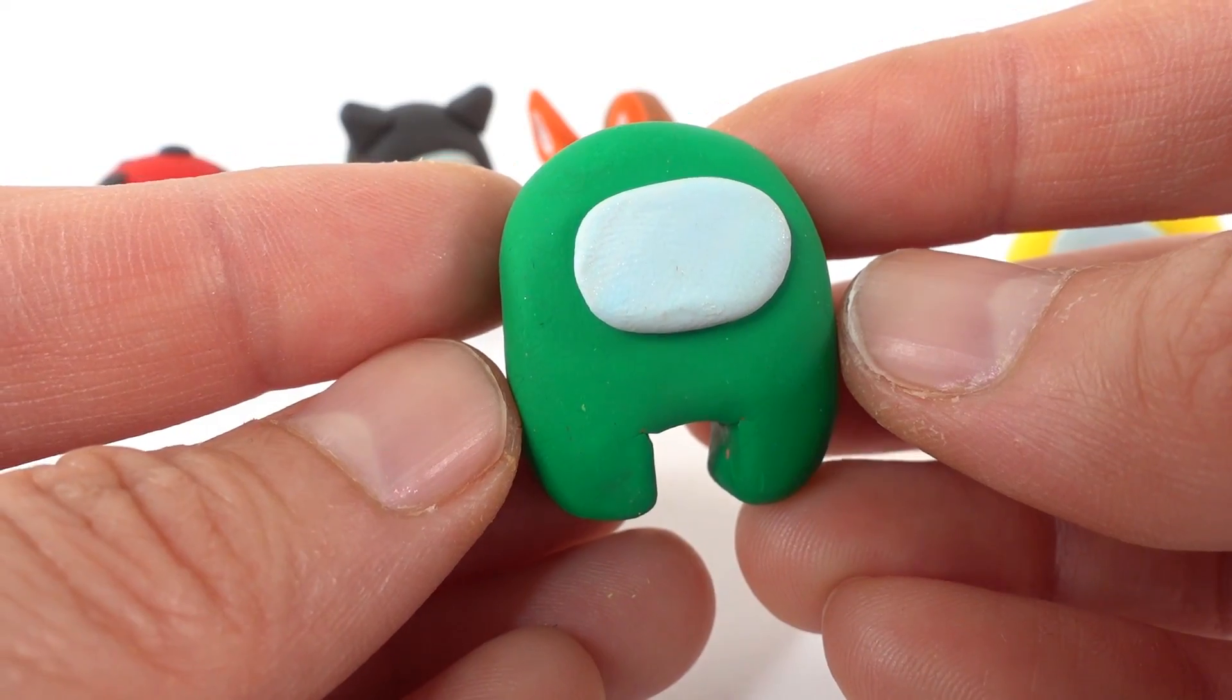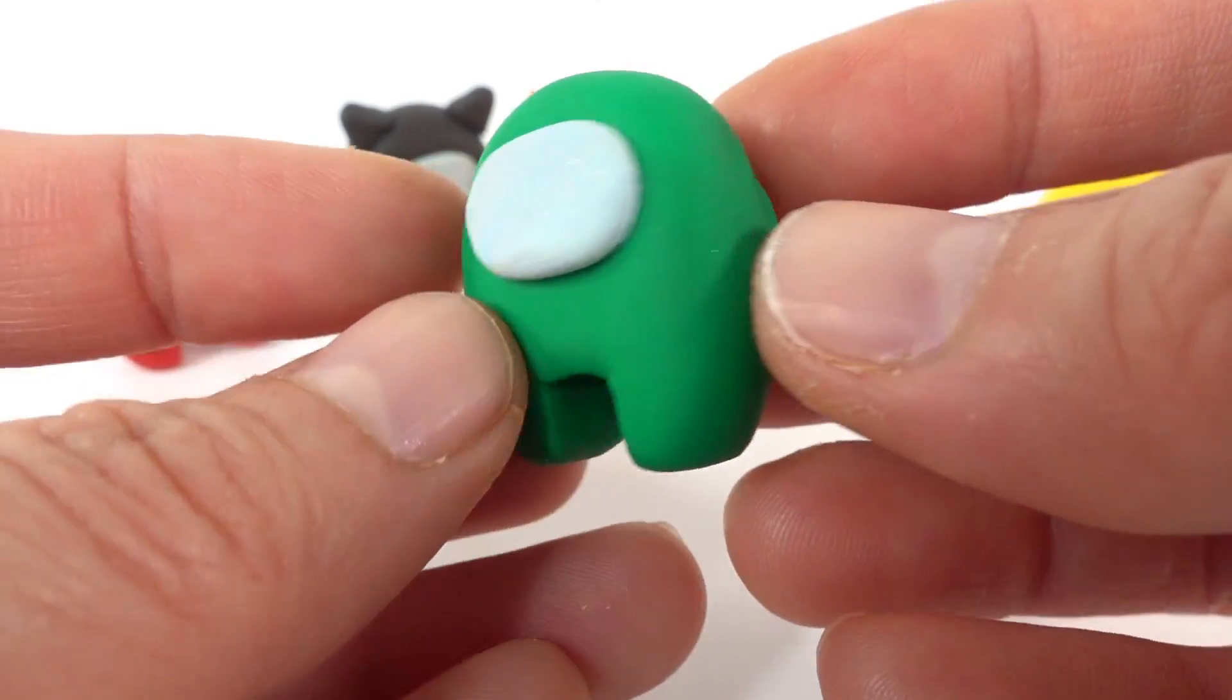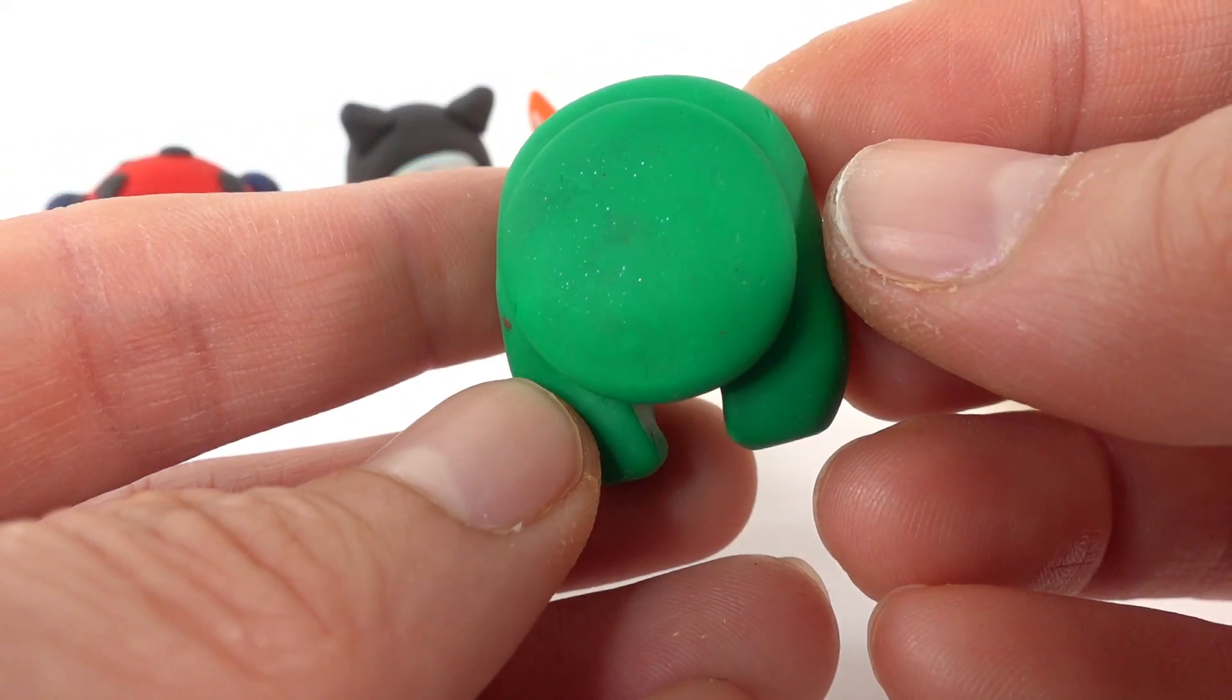Here is Carapace. Carapace looks like a regular crew member on the front. But on the back, he has a round oxygen pack.